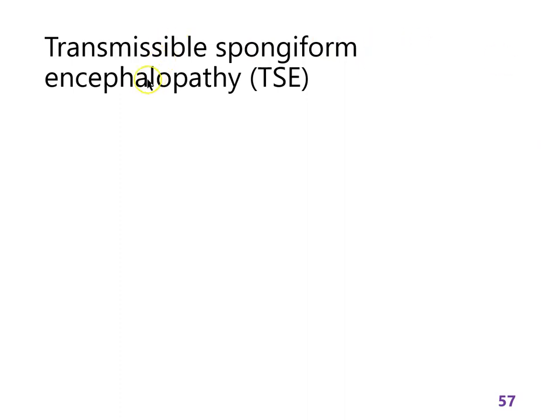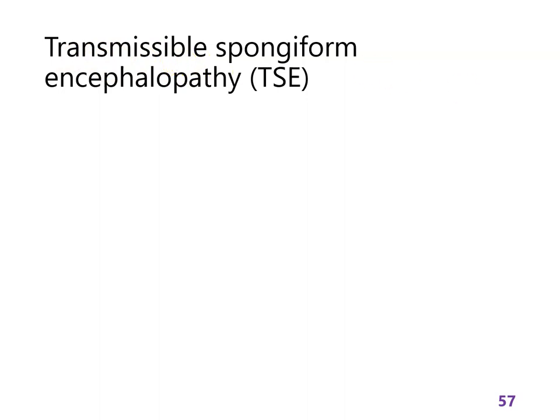So here we go. Prions are little proteins that cause transmissible spongiform encephalopathies. Let's break this down: 'encephalopathy' means something bad happening in the brain; 'spongiform' means it turns the brain into a sponge; and 'transmissible' means it can spread from person to person. So that's not what you want.